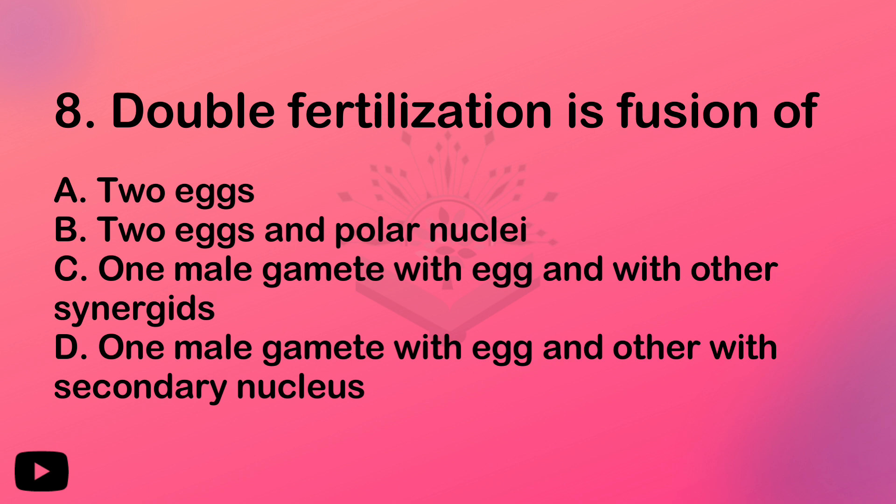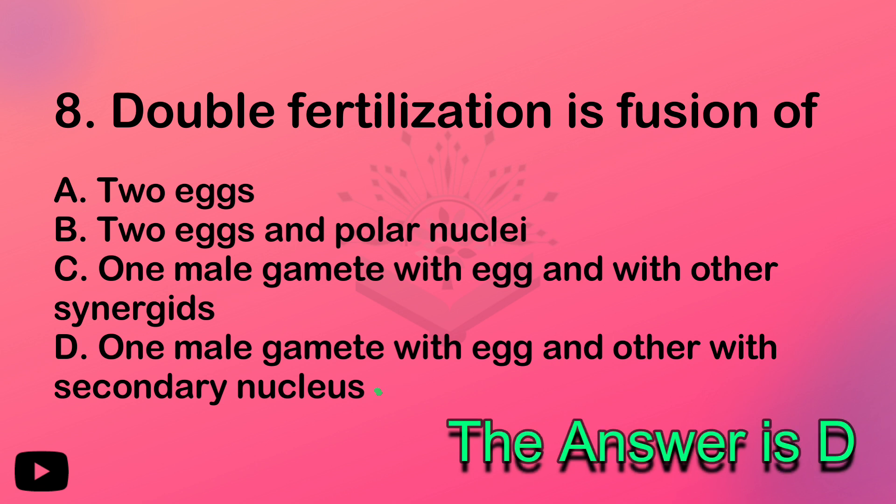One male gamete fuses with the egg — we have a pollen tube and embryo sac. The synergids with the filiform apparatus guide the pollen tube. The second male gamete fuses with the two polar nuclei — we have a fuse. The answer is Option D.